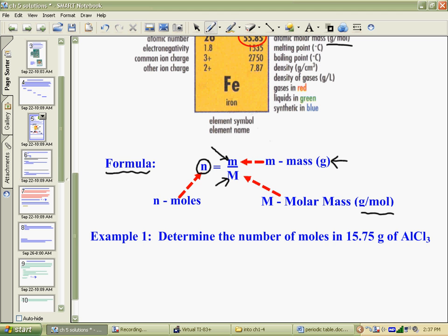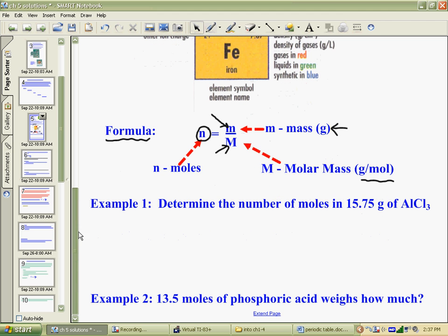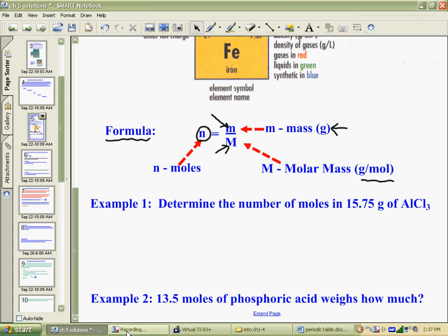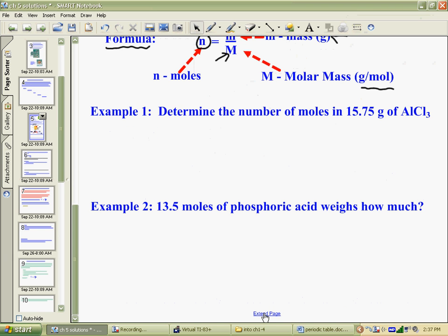Now, it's entirely possible that you'd have to rearrange that formula and move things around to answer questions. So, if we take a look at doing a couple of examples, we'll look at this example. Determine the number of moles in 15.75 grams of aluminum chloride.